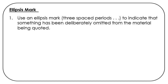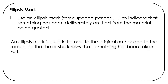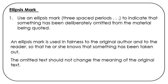Use an ellipsis mark — three spaced periods — to indicate that something has been deliberately omitted from the material being quoted. An ellipsis mark is used in fairness to the original author and to the reader, so that he or she knows that something has been taken out. The omitted text should not change the meaning of the original text.